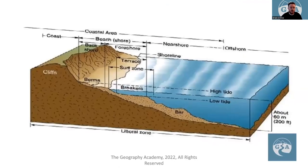Here we are. We have the coastal area, which includes the coastline. Then we move on to the beach. The beach is made up of a backshore and foreshore — those are going to be the main terms we refer to. We also have a high tide and a low tide, and that creates an area called the surf zone, where the waves are breaking coming into the coastal area. Collectively, we call this the littoral zone.